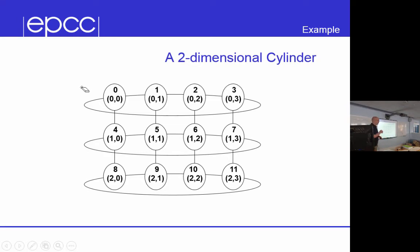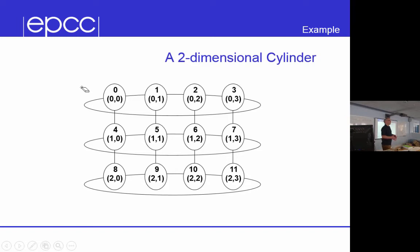That's effectively like one slice of this cylinder here: 0 passes to 1, 1 passes to 2, 2 passes to 3, and 3 passes around to 0. We could write ourselves the code which calculates who we pass to — and you have probably done that already in the passing-around-the-ring example. But MPI will give you a way of doing this without having to write that code that says if my rank is 0 then I have to do something special.